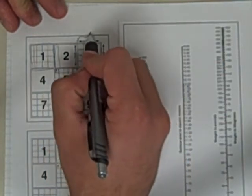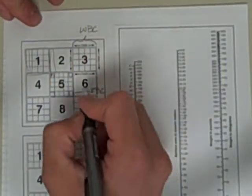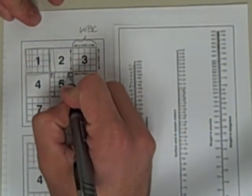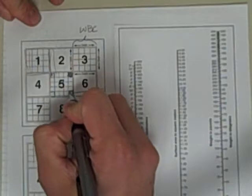So again, the bigger ones are white blood cell squares. These tiny ones in the middle would be considered red blood cell squares.